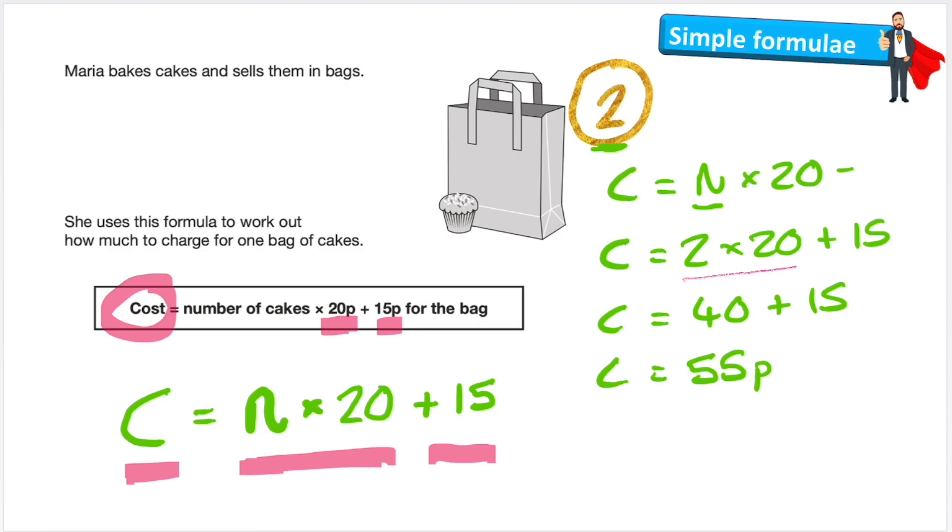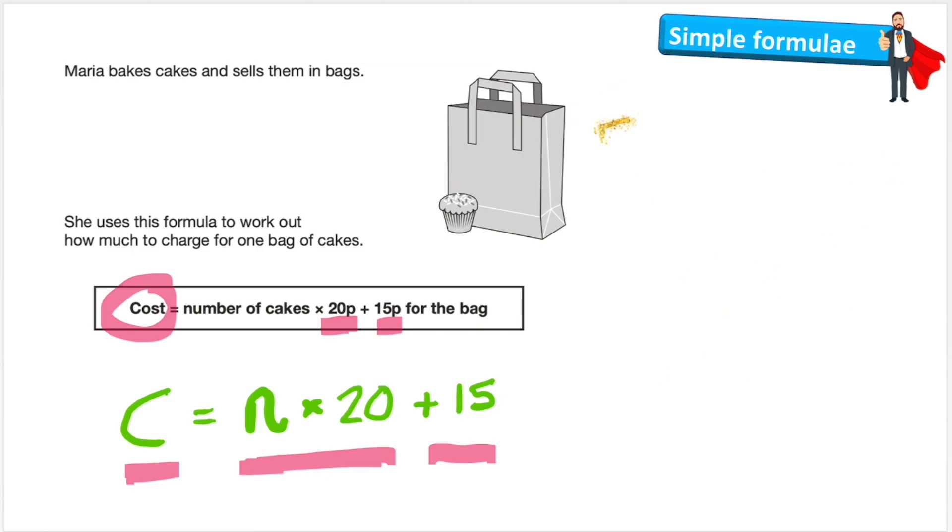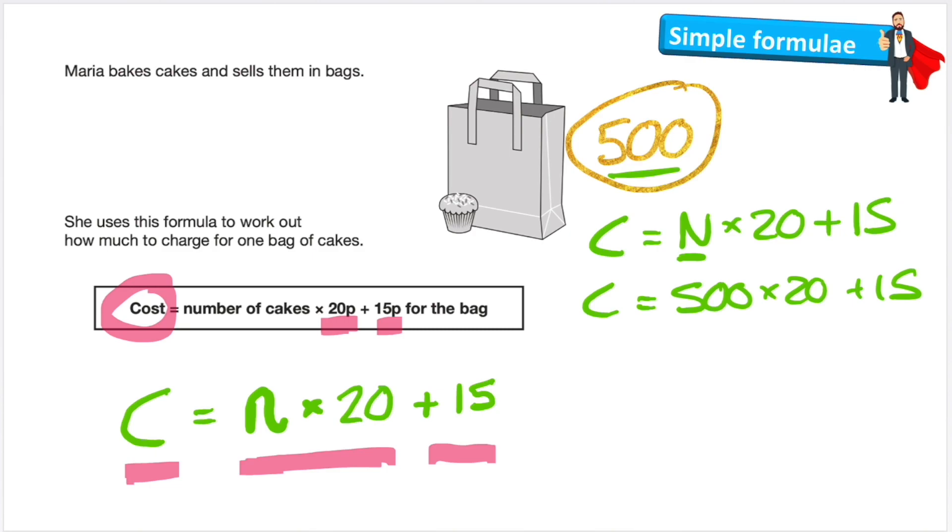Let's see a different example with a higher value and see if the formula still works. Let's buy 500 cakes. A bit crazy, but let's see. Let's write my formula again. C equals number of cakes times 20 plus 15. Now I'm going to substitute my N for my 500. C equals 500 times 20 plus 15. Remember BODMAS, we have to do the multiplication first. So I'll be left with C equals, well 500 times 10 would be 5,000, so 500 times 20 would be 10,000 plus 15. Left with my addition question. So it's C equals 10,000 and 15 pence. But again, the important thing to understand is that our formula here, the one that we created this time, would work with any amount of cakes bought.